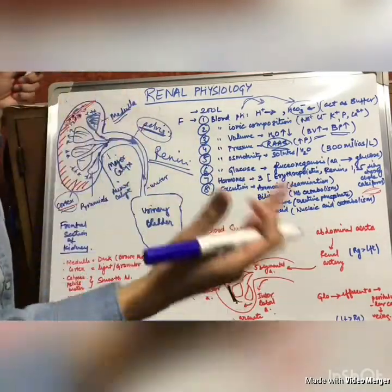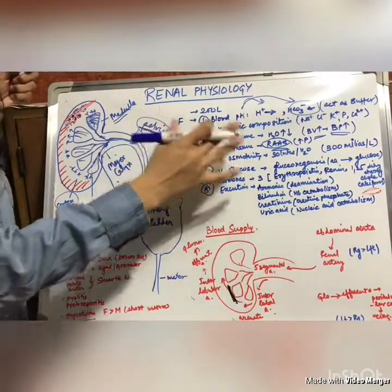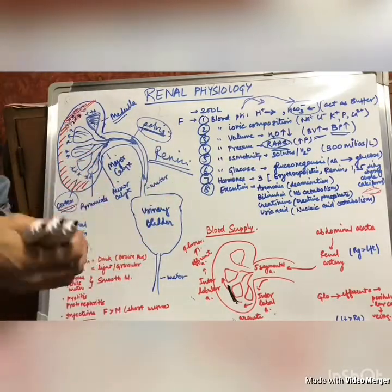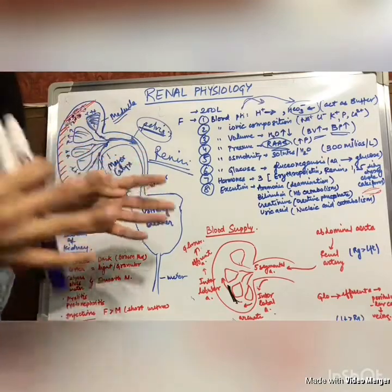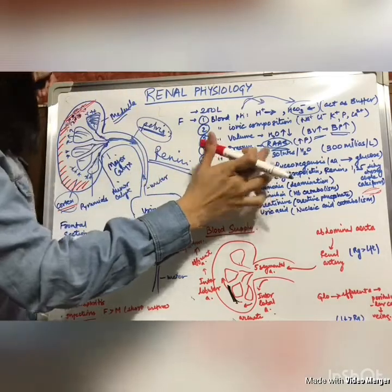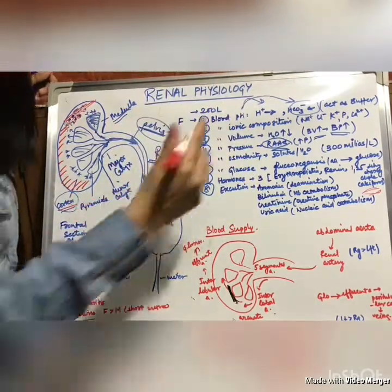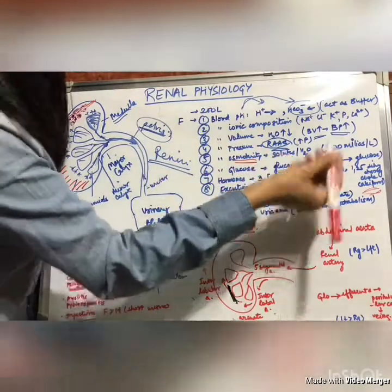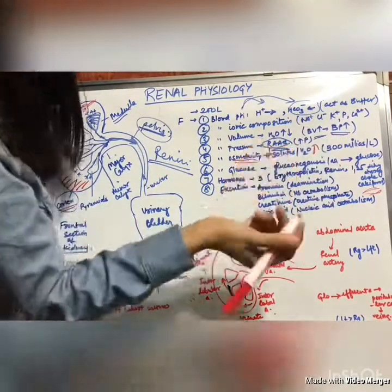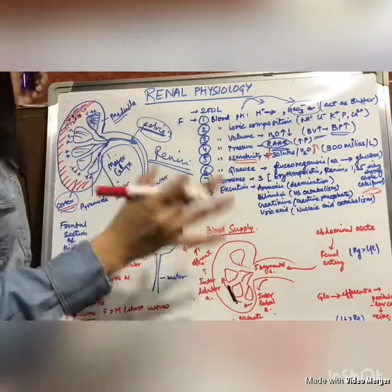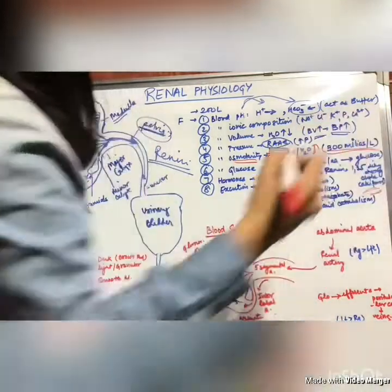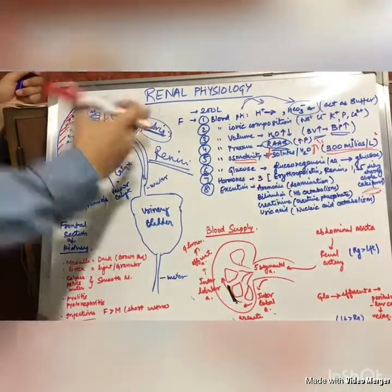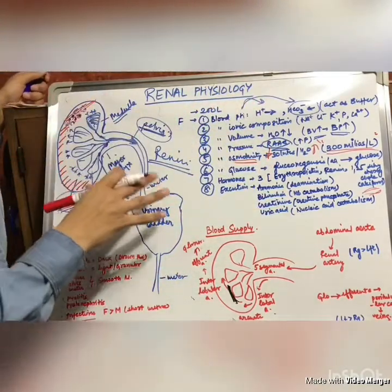I'll explain the RAAS in further videos. The fifth function is blood osmolarity. In the blood, both solutes and water are present. When solute concentration increases and water concentration decreases, blood osmolarity rises. The kidney absorbs more water or excretes solutes to decrease osmolarity. Normally blood osmolarity is 300 milliosmol per litre — remember this value.